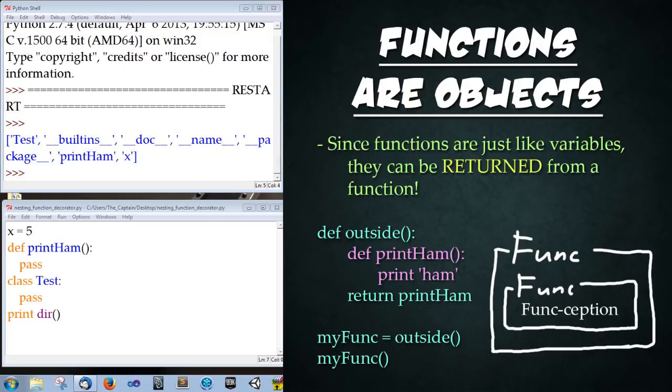Alright so why do I bring this up? Well functions can return objects or instances of classes, variables, strings, integers, etc. But they can also be used to return functions. That's right a function can return another function. So let's create a simple example.